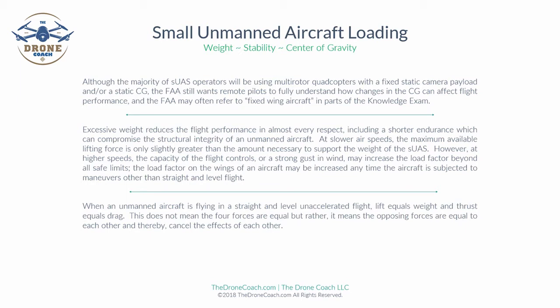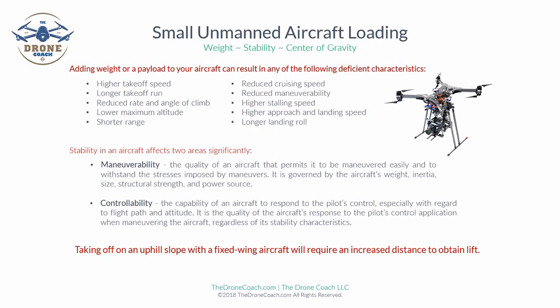When an unmanned aircraft is flying in straight and level unaccelerated flight, lift equals weight and thrust equals drag. This does not mean the four forces are equal, but rather that the opposing forces are equal to each other and thereby cancel the effects of each other. Adding weight or a payload to your aircraft can result in any of the following deficient characteristics: a higher takeoff speed, longer takeoff run, reduced rate and angle of climb, lower maximum altitude, shorter range, reduced cruising speed, reduced maneuverability, higher stalling speed, higher approach and landing speed, and longer landing roll.